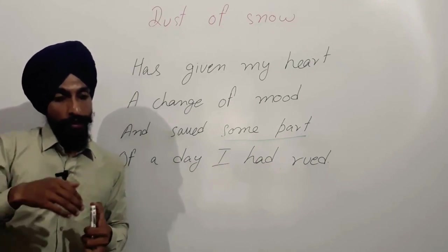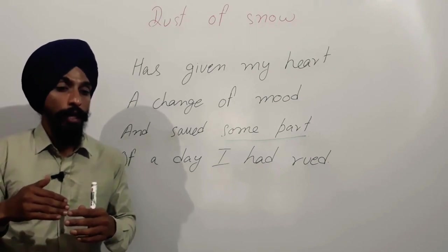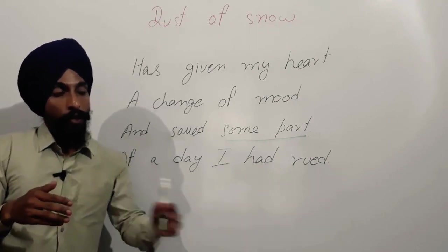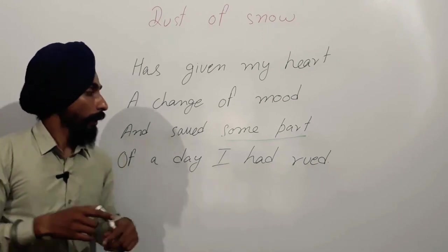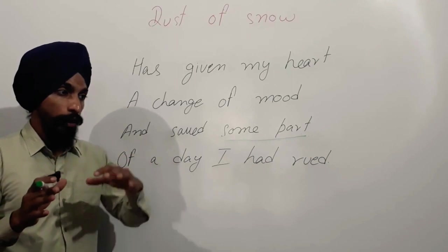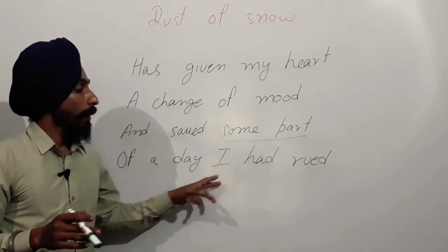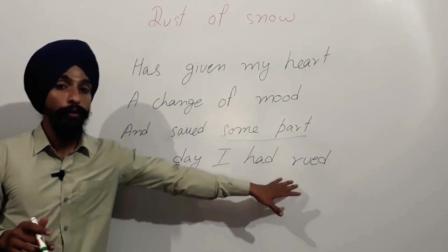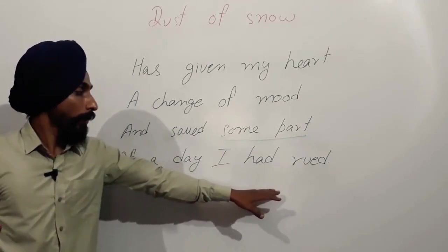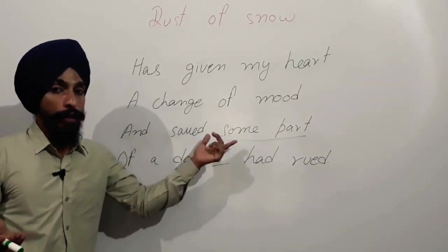From the morning until sitting under the tree, the time passed in sadness. But the remaining time — from that point until evening — that part of the day was saved. 'And saved some part of the day I had rued' means that the remaining part of the day was rescued from being wasted.